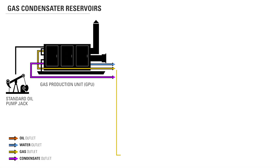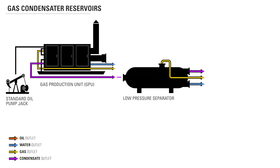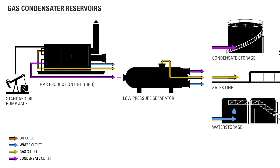Gas condensate reservoirs will follow the same path as dry gas reservoirs except for the condensate. Because of the large amounts of condensate these reservoirs produce, the liquid condensate will go into a low pressure separator in order to further separate it from the gas. The condensate will go to storage and the gas will go into a sales line.